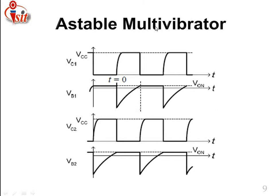For the astable multivibrator, VC1, VB1, VC2, and VB2: VC1 and VC2 are totally opposite to each other — if 0 level is present in one, then 1 level is present in the other, and vice versa. This means there is no stable state available. Similarly, for VB1 and VB2, a sawtooth-like structure is observed, alternating between flat and sawtooth patterns.